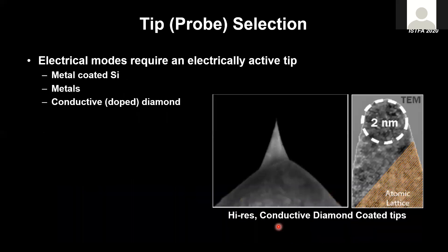The second practical aspect is probe selection. Every mode has a family of probes well suited to that particular measurement. One important example: for high-resolution electrical measurements on relatively hard samples that can wear out a sharp tip, a diamond-coated tip is ideal. It has a tip size down to a few nanometers, is made of highly doped diamond — nicely conductive for all electrical measurements — but also very robust to handle harder sample types. There are many other tip options including various metal-coated tips.